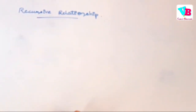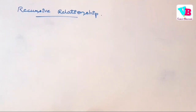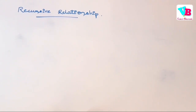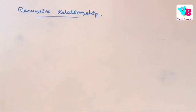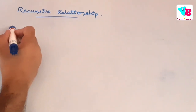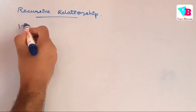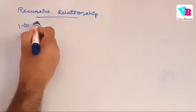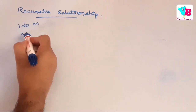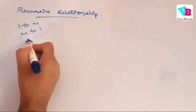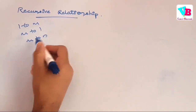Let us bring the board down. So basically, recursive relationship is what? Point entity. We saw about different types in the last video — one to many, many to one, many to many.